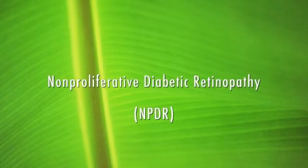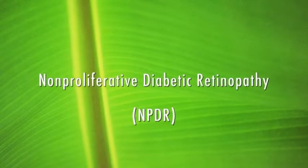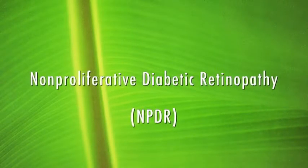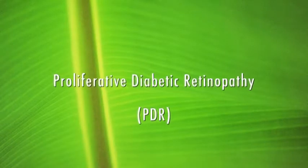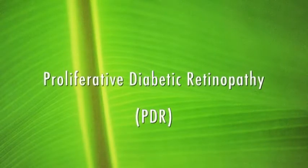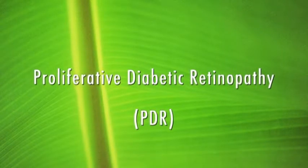There are two types of diabetic retinopathy in which vision loss occurs. One type is called non-proliferative diabetic retinopathy, or NPDR. Another type is called proliferative diabetic retinopathy, or PDR.